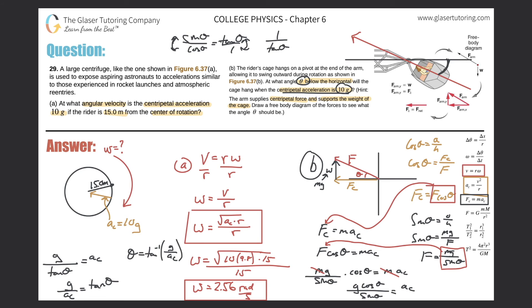Plugging in the values: theta equals tan⁻¹ of 9.8 divided by (10 times 9.8). That simplifies to tan⁻¹ of 1 over 10. So theta equals 5.71 degrees. The angle we solved for in our coordinate system is the same as the angle below the horizontal that was asked for in the problem.